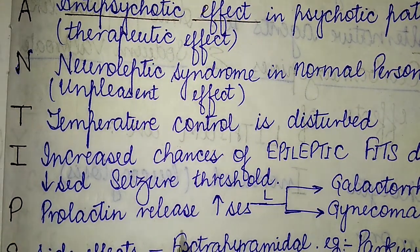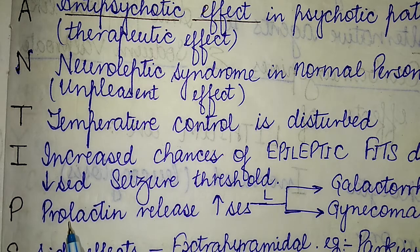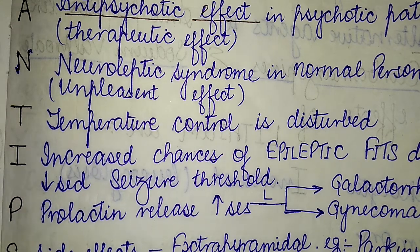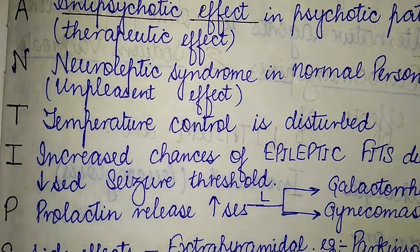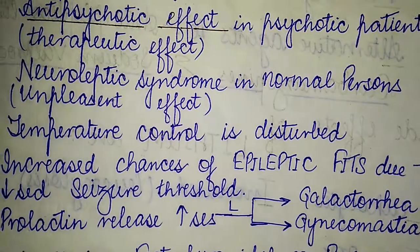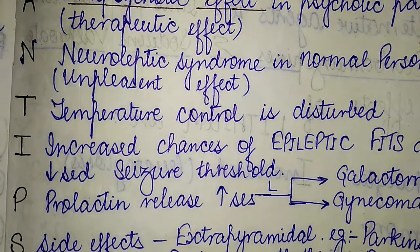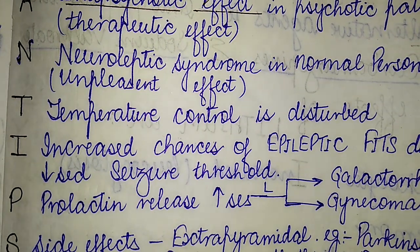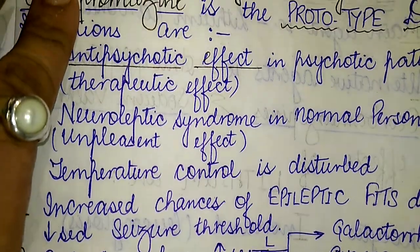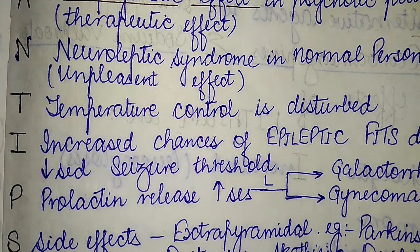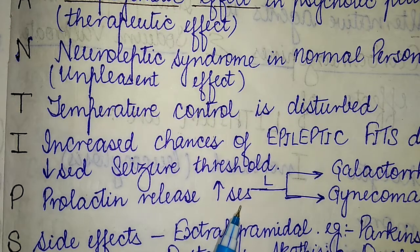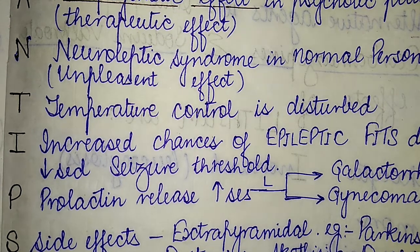The P of anti-psychotic stands for increased prolactin release, which can lead to galactorrhea and gynecomastia. This is another adverse effect that can be remembered using the P of anti-psychotic — increased prolactin release leading to galactorrhea and gynecomastia.